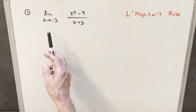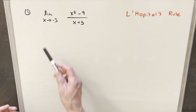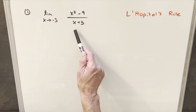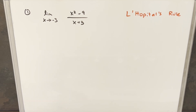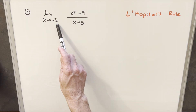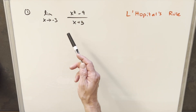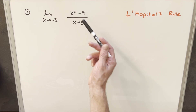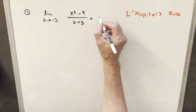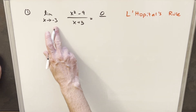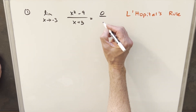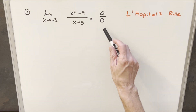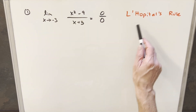Looking at problem number one, we're asked to find the limit when x is approaching minus three of x squared minus nine over x plus three. The first thing we can do is plug minus three in and see what's happening. If we plug minus three in for x squared, we get nine minus nine — so we have a zero in the numerator, and plugging minus three into the denominator also gives us zero. So this is an indeterminate form and a good case for L'Hôpital's Rule.